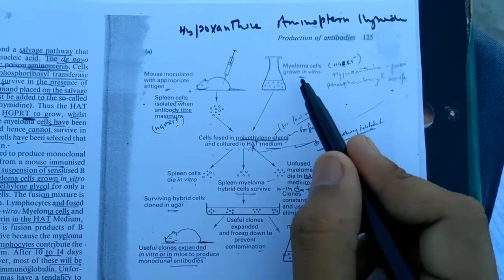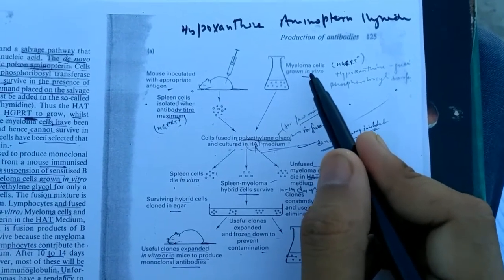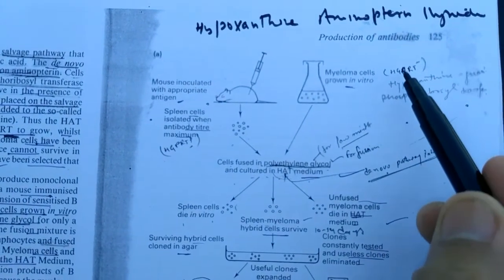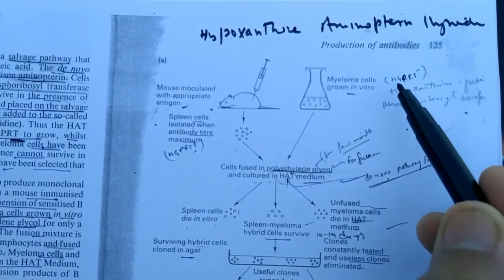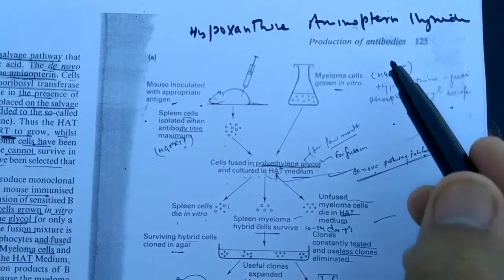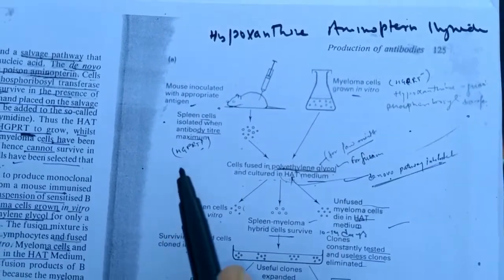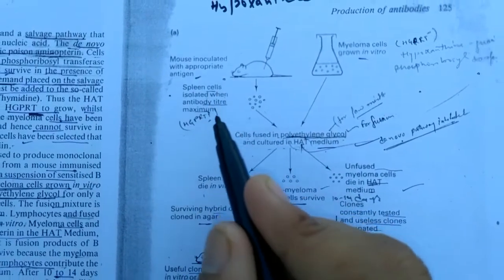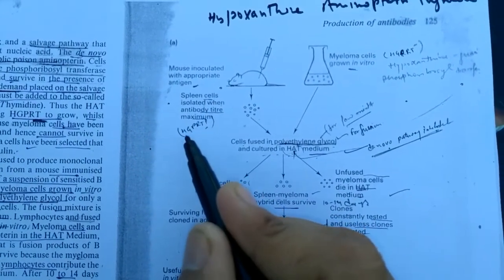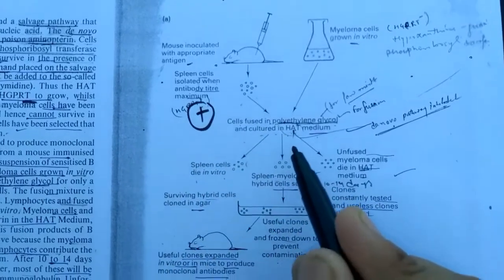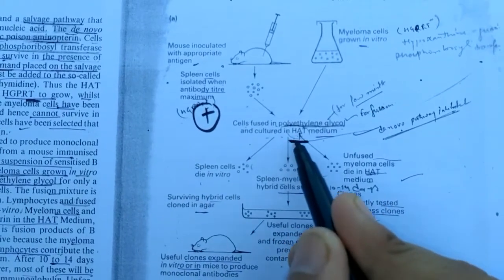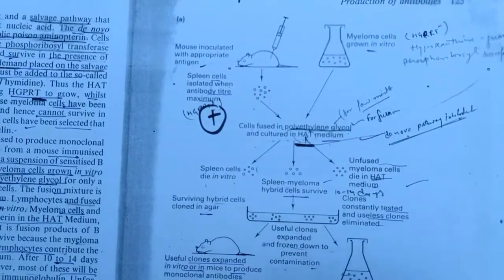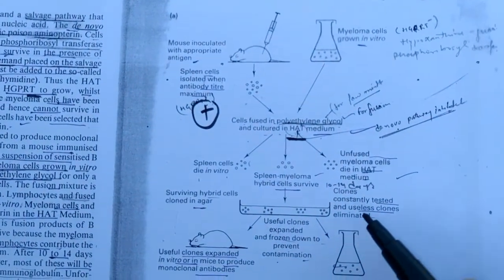The spleen cells are isolated here. Here are the myeloma cells grown in the in vitro condition. The myeloma cells fail to survive in HGPRT condition. So they will survive in active condition. But the lymphocytes of spleen can survive in HGPRT medium. They are fused in HAT medium. The HAT medium will produce the hybridoma type of cell.